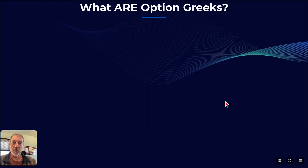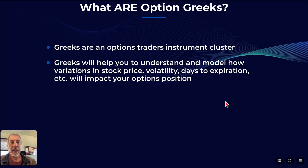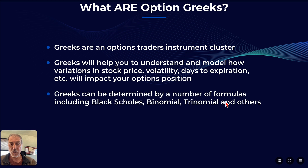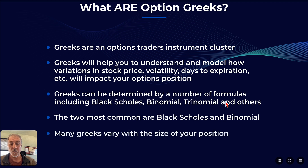Vega is probably one of the more important Greeks. They're all important, but just to review again what the Greeks are: they're an options trader's instrument cluster. They help you understand how to model the variations in stock price, volatility, days to expiration, etc., and how those different variations are going to impact your overall position. They can be determined by a number of formulas, including Black-Scholes, binomial, trinomial, and others. The most common are Black-Scholes and binomial, and it's important to remember that the Greeks will vary with the size of your position. For example, if you have two long calls, the Greeks are pretty much going to be double what they would be if you had one long call.